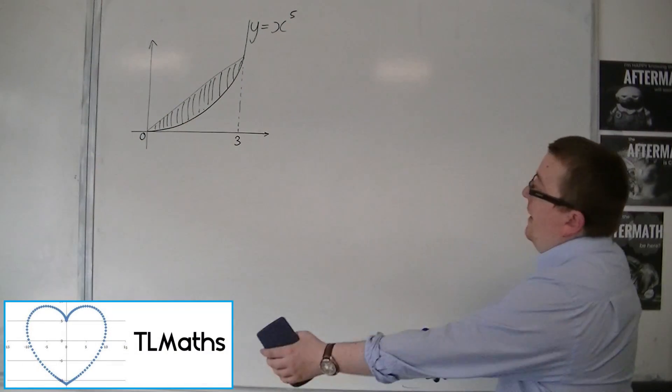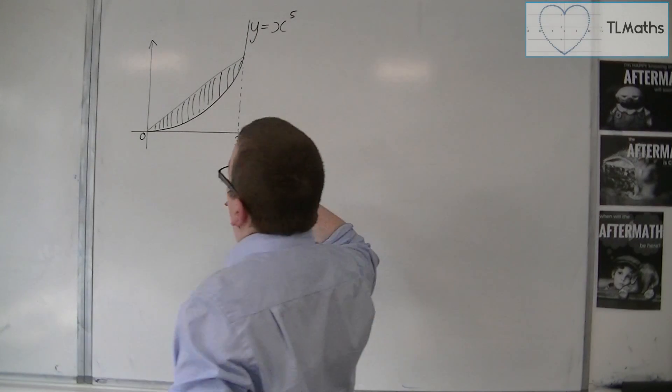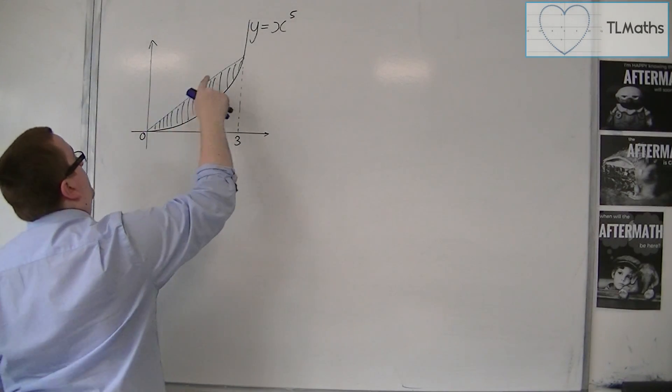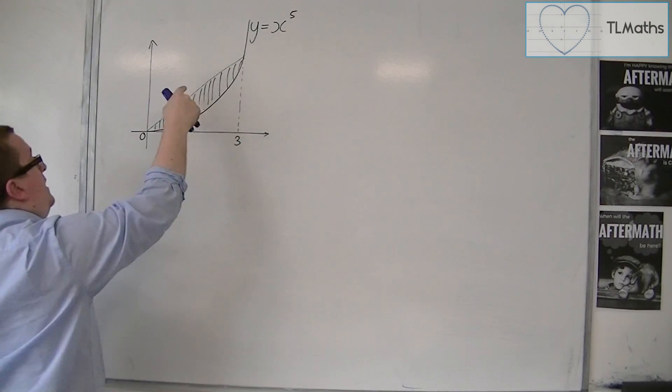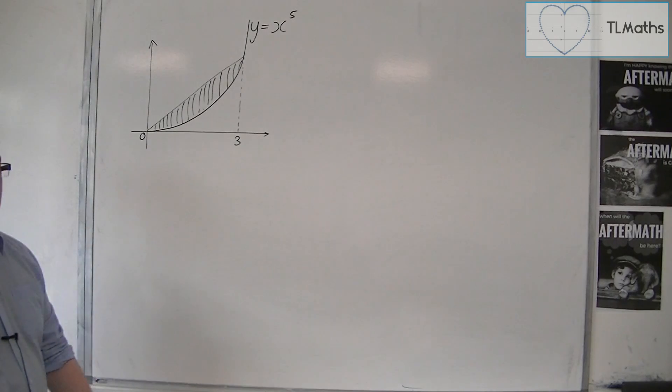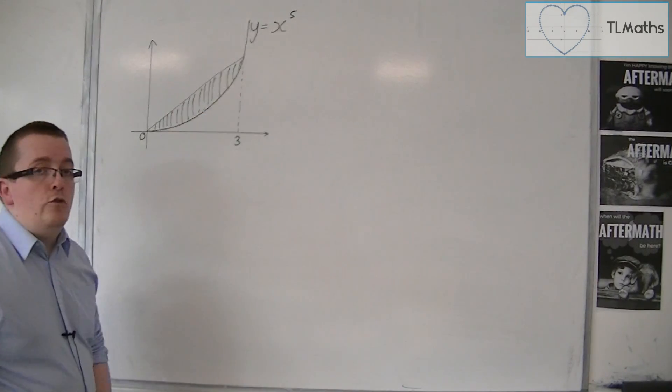So in this video what we have is the curve y equals x to the 5, and I've drawn a diagonal line going from the origin to the curve. The line and the curve meet at x equals 3. So what we want to do is find this shaded area.